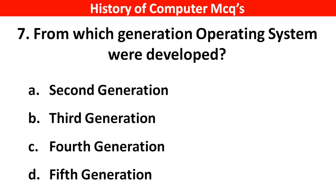Next question. From which generation were operating systems developed? Options A: Second generation, B: Third generation, C: Fourth generation, D: Fifth generation. Right answer is option B, Third generation.